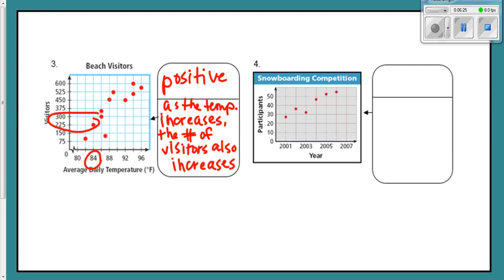And the way we would kind of describe this is to say, as the temperature increases, the number of visitors also increases. And you may be thinking, yeah, of course. Right. If it's cold outside, people don't want to go to the beach. It's hot outside. People want to go to the beach. Makes sense. Let's look over here at snowboarding competition. In general, my points are going up. So I'm going to say this is a positive trend, a positive association, a positive correlation. All those words are synonymous. Trend equals association equals correlation.